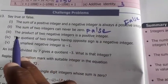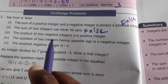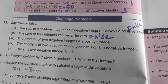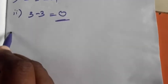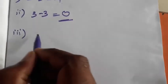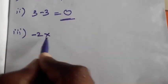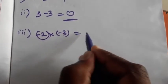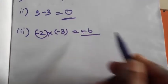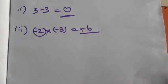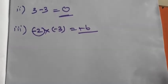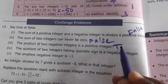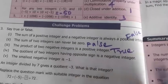Third one: the product of two negative integers is a positive integer. For example, minus two multiplied by minus three — minus into minus gives plus, so two times three equals six. The product is positive, therefore the given statement is true.